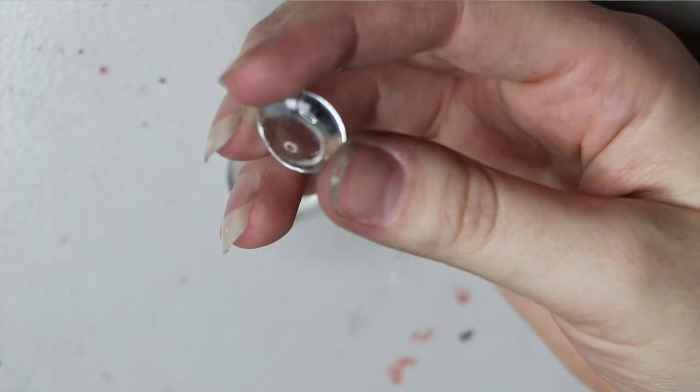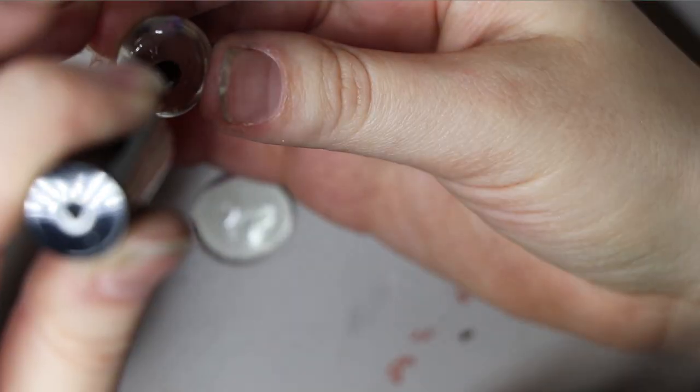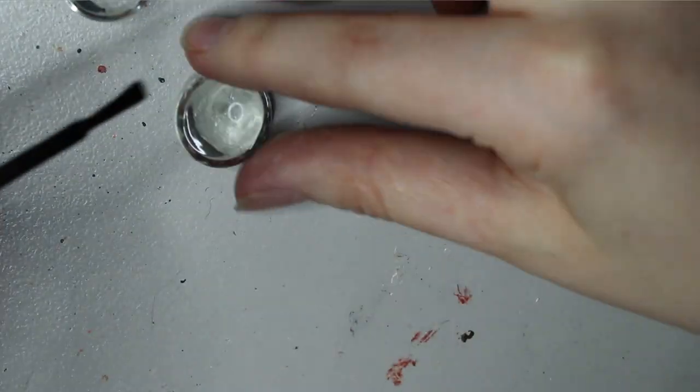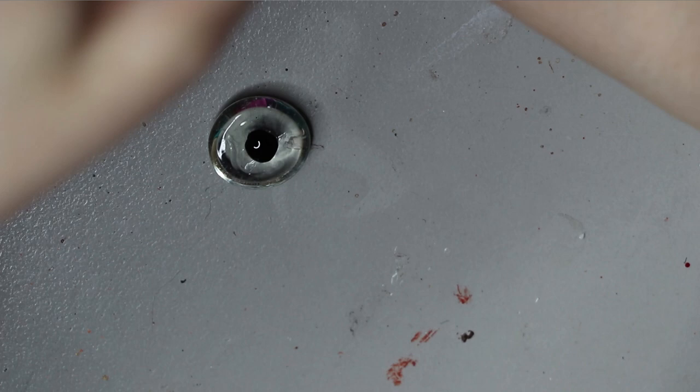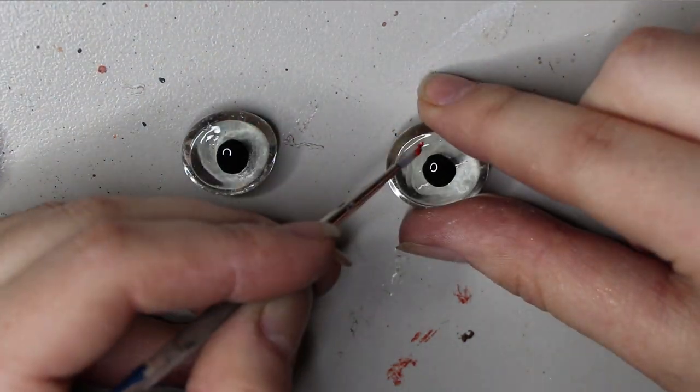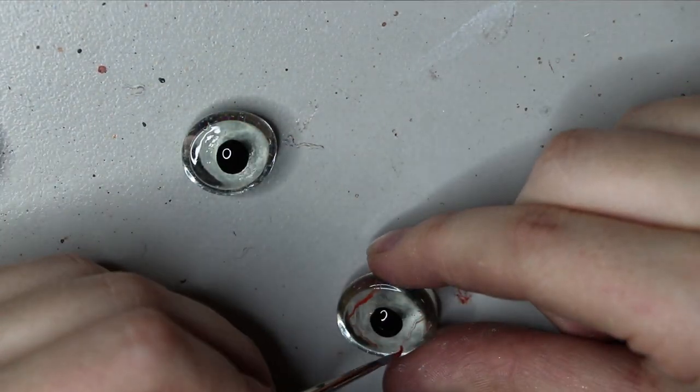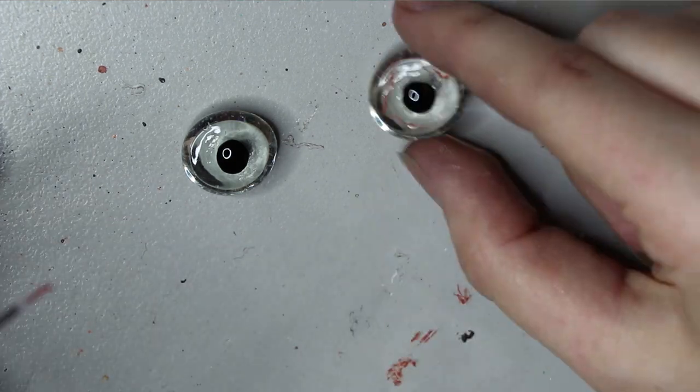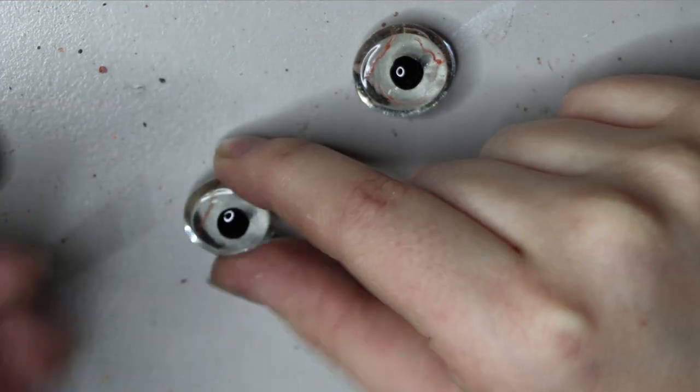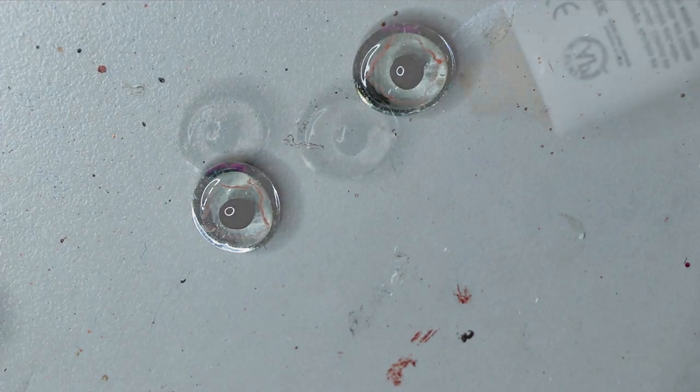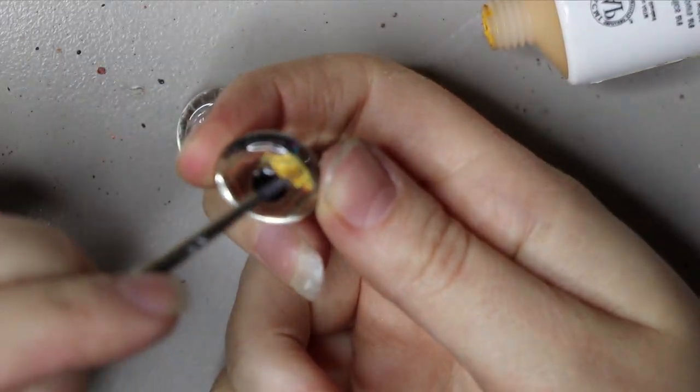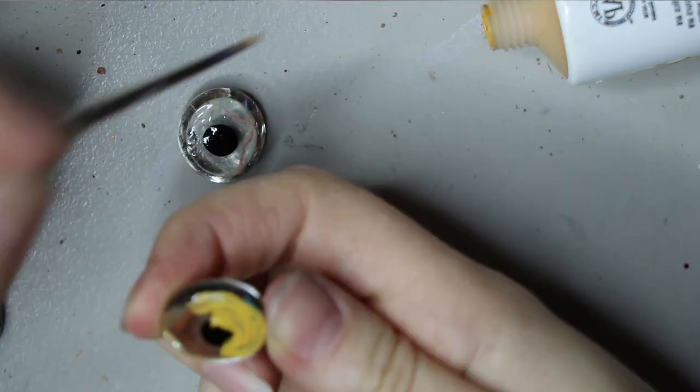I'm starting off by making glass eyes with this particular doll. I'm just using some dome glass cabochons and I'm painting them myself with nail polish and acrylic paints.